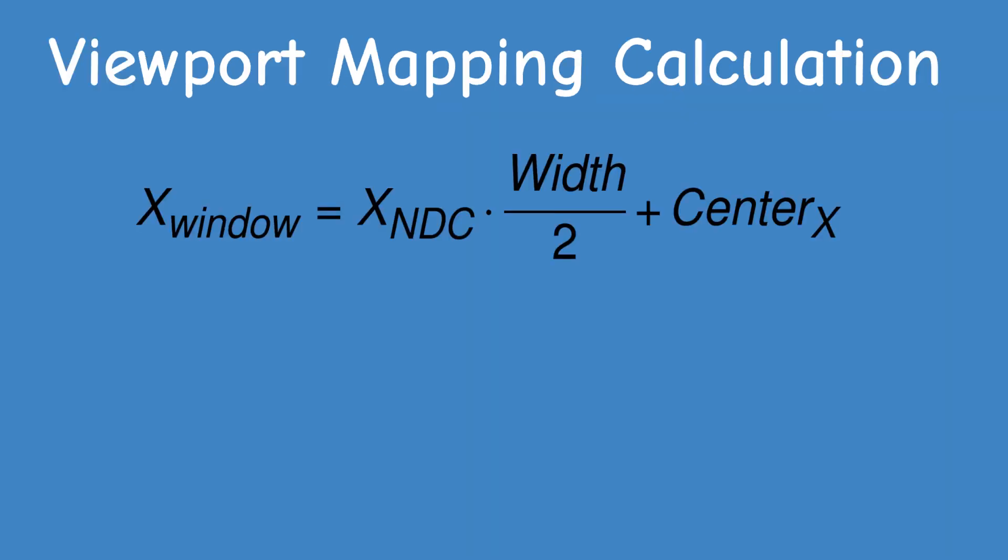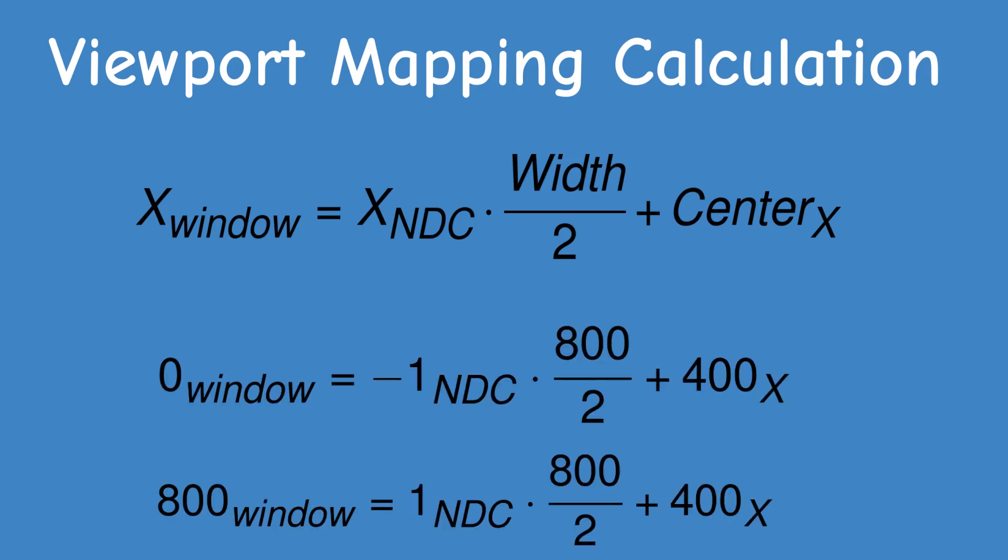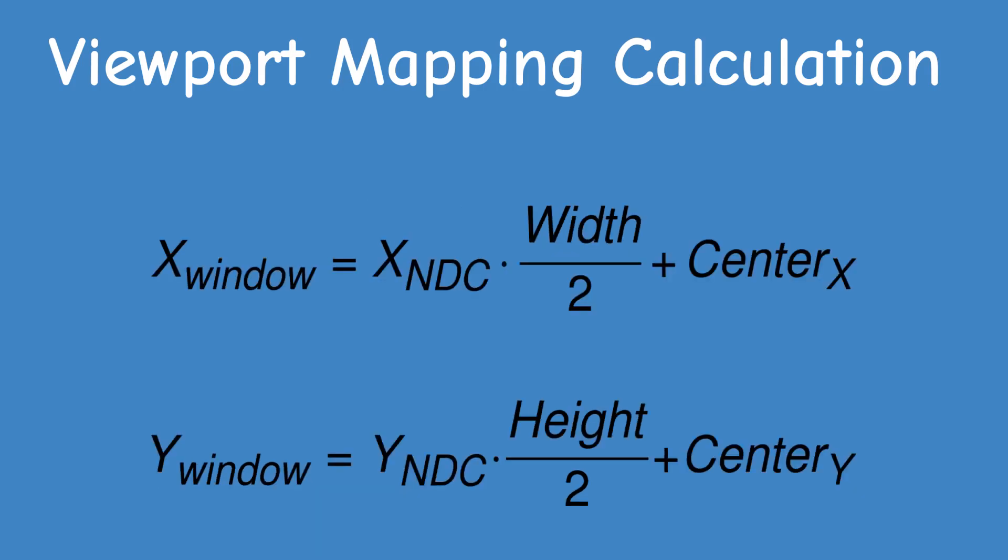In order to map the X coordinate, we multiply it by half of the window width in pixels and add the center of the window along the X axis. For example, if the window width is 800 pixels, the center is 400. This equation will map the NDC range minus 1 to 1 to the physical range of 0 to 800. Calculating Y in screen space is exactly the same. We just need to use the height of the window instead of the width.